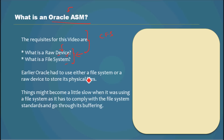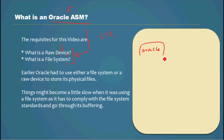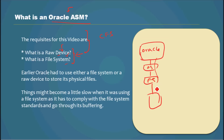Earlier, Oracle had to use either a file system or a raw device to store its physical files. Things could become a little slow when using a file system, as Oracle had to comply with file system standards and go through its buffering. Oracle had to go through the file system, which would use its own buffering technology, and comply with whatever the file system required to access the hard drive.